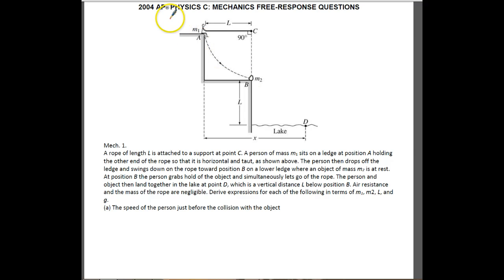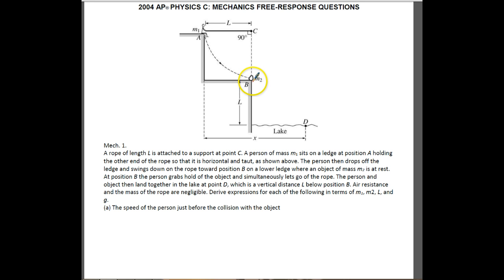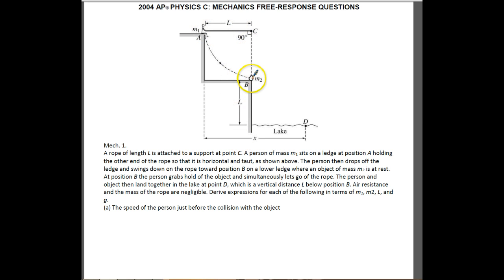Hey AP Physics C, it's Warner. We're going to look at the 2004 AP Physics C mechanics question number one. You've got a rope of length L attached at point C and it's free to pivot. So you're holding on to that rope, you swing down, and hopefully you've missed this cliff. You let go of the rope, and you and the object you kick both land in the lake together at point D, which is another vertical distance L. So this distance L makes the horizontal and vertical distances both equal to L. The person and object land together.